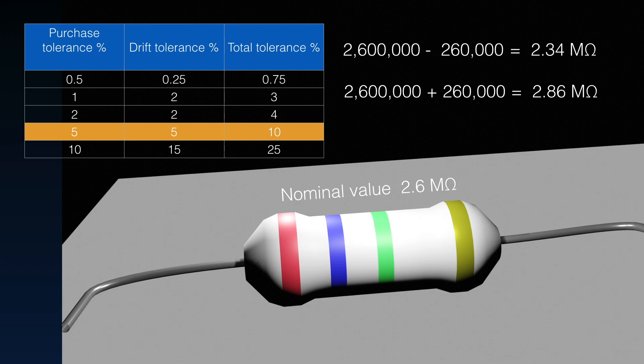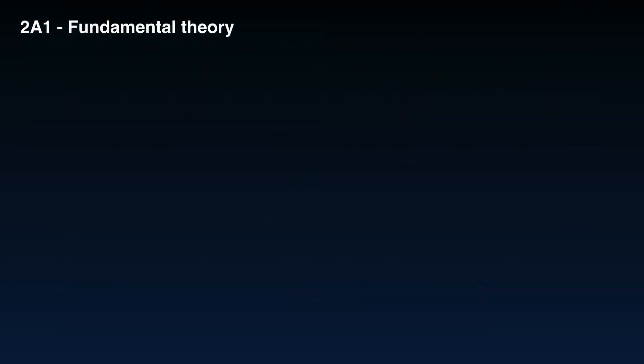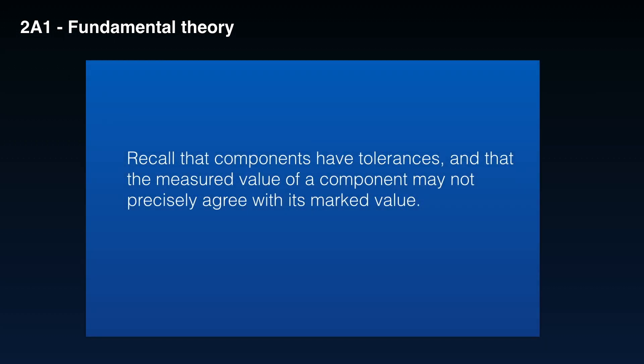If we bought a 10% resistor, one with a silver band, we could have up to a 25% difference. So, when we're designing our circuits, we have to take into account the tolerance. In the syllabus, returning to that item, it's simply a recall item. We don't need to understand the background to it too much, but we do need to recall that components have tolerances and that the measured value of a component may not precisely agree with its marked value.